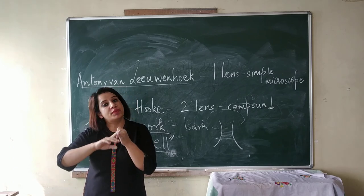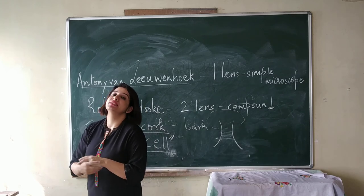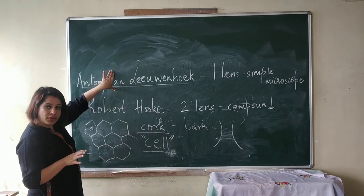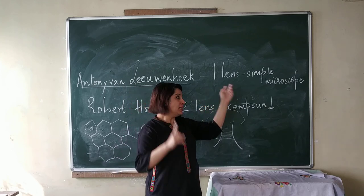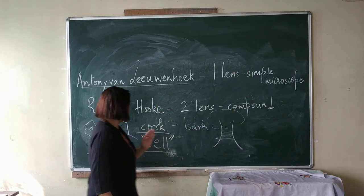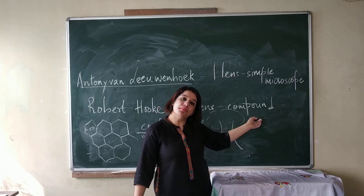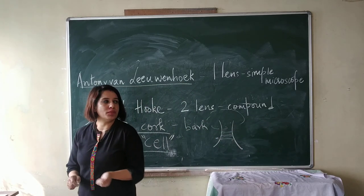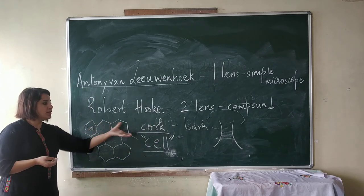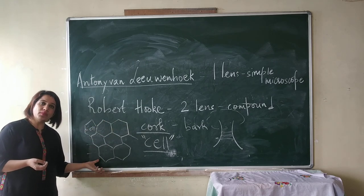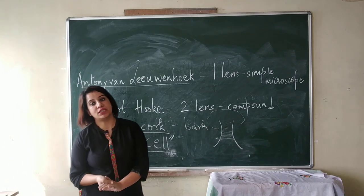He was the first person to observe cells and also the first person to coin the term cell. So once more: Antoni van Leeuwenhoek was the first person to construct a microscope — his microscope had one lens, it was called a simple microscope. Robert Hooke made a microscope with two lenses, it was called a compound microscope. Using this compound microscope, he observed cork and saw that cork is made up of honeycomb-like structures and he called it cell.